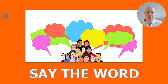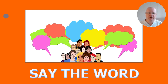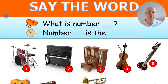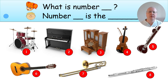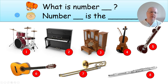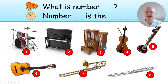After you go through all eight musical instruments, you get to do some exercises. Exercise number one is 'say the word' — a very simple one. You ask the students what is number two, and they say number two is the piano. What is number four? Number four is the violin. Simple.